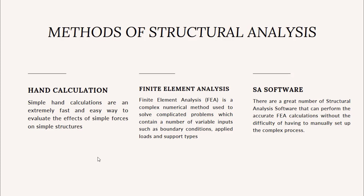Now we will move to methods of structural analysis. There are basically three methods: hand calculation analysis, finite element analysis, and structural analysis software. Hand calculations are an extremely fast and easy way to evaluate forces on simple structures. Finite element analysis is a complex numerical method used to solve complicated problems containing boundary conditions, applied loads, and support types. Structural analysis software can perform accurate FEA calculations without manually setting up the complex process.